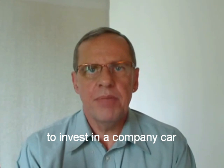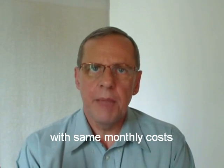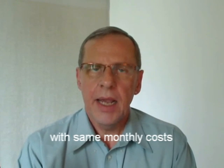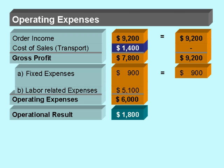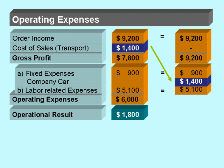Now we decide, instead of taking taxis, to invest in a company car because we found out that the costs for depreciation are exactly the same as the costs we spent for taking taxis. So we assume the same order income, but our cost of sales will be zero, so our gross profit will increase to $9,200. The fixed expenses will be increased by the depreciation for the company car. With the same labor related expenses we have an increase of the operating expenses to $7,400. As a result, the operational result will be exactly the same.